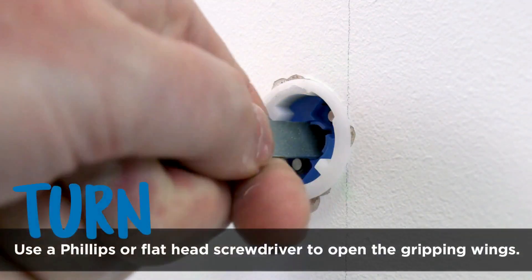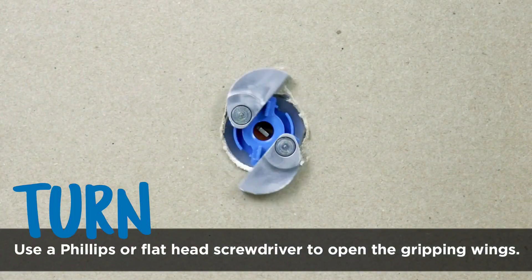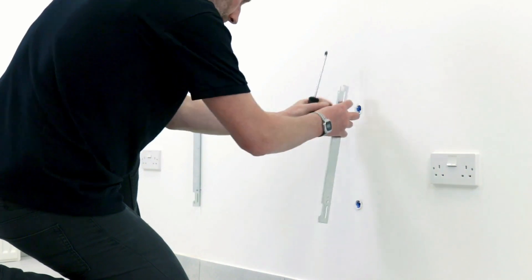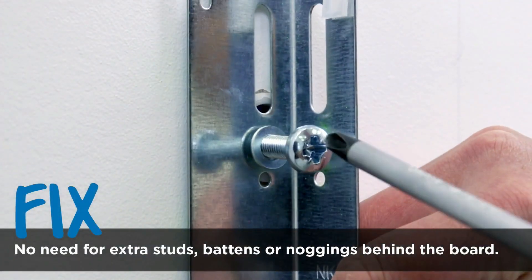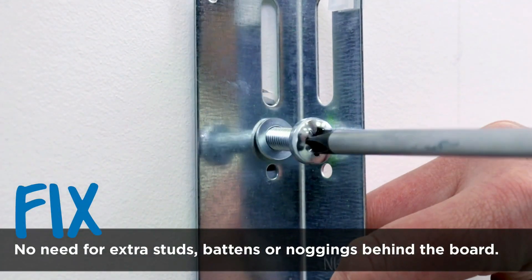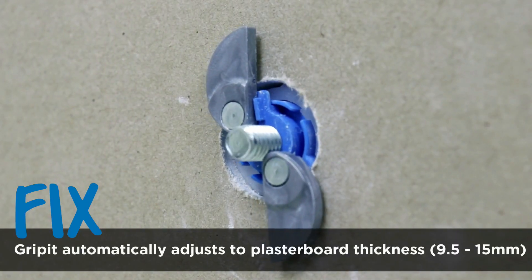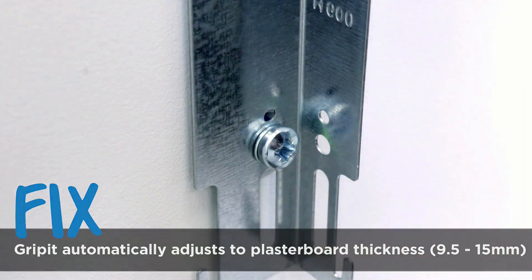This type of installation causes immense stress on the plasterboard and tends to result in the plasterboard failing. The only recommended TV brackets that are compatible with Grip it products or kits are fixed wall brackets which allow no movement of the TV whatsoever.